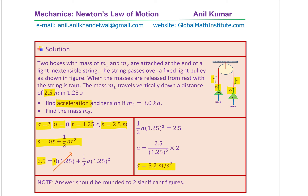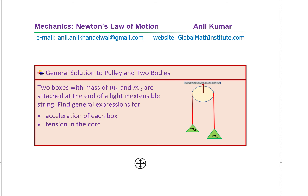Now, let's work on finding the tension in the string and the other mass. We will take a general solution of a pulley with two bodies. We have two different masses M1 and M2 and the pulley. The general question is: two boxes with mass M1 and M2 are attached at the end of a light inextensible string — find the general expression for acceleration of each box and tension in the chord. We will find a formula for acceleration and tension, then knowing the values given in our question, we will find the answer.